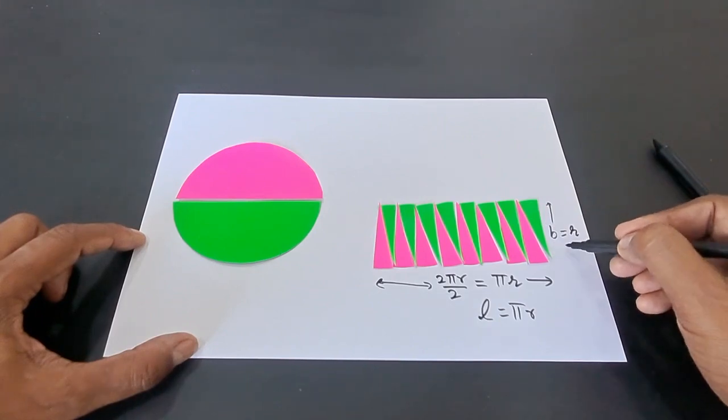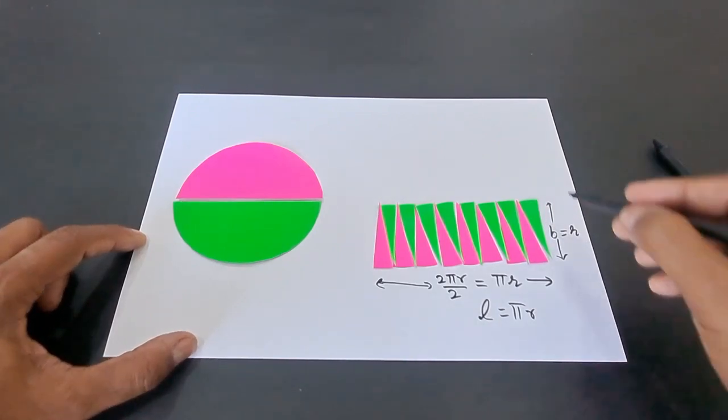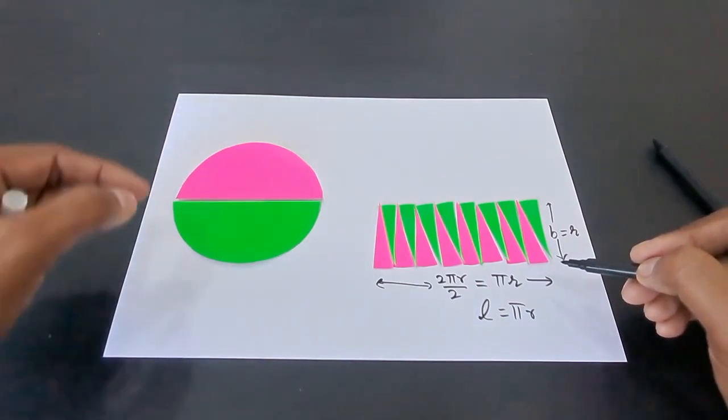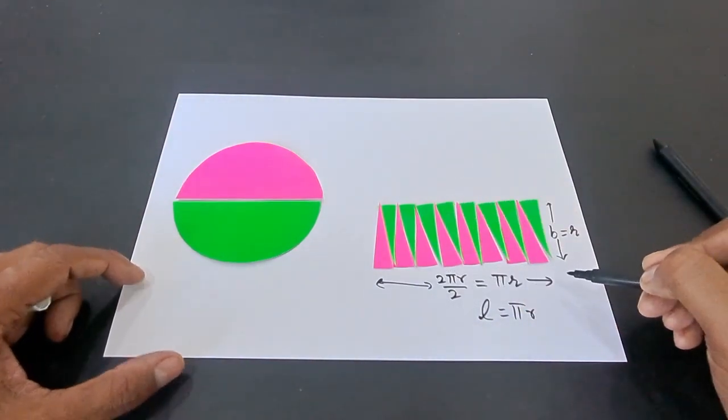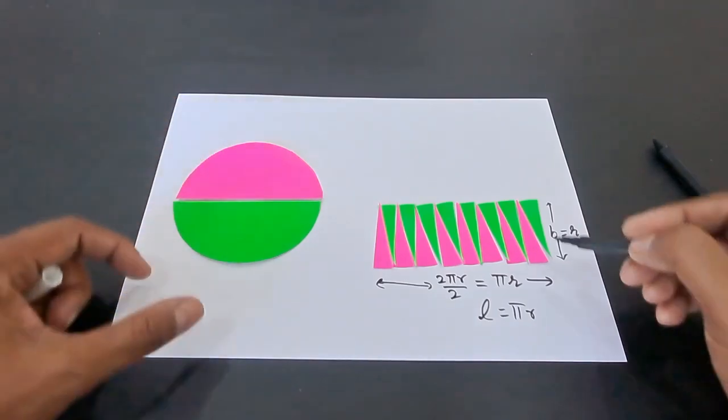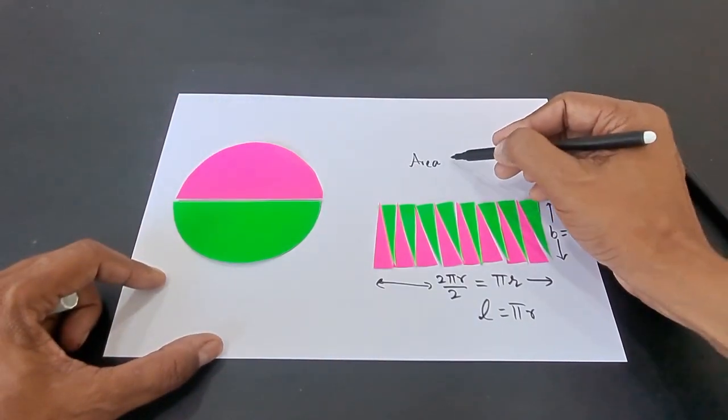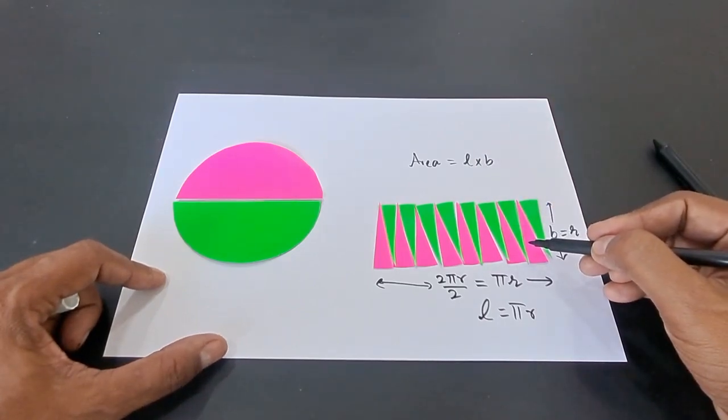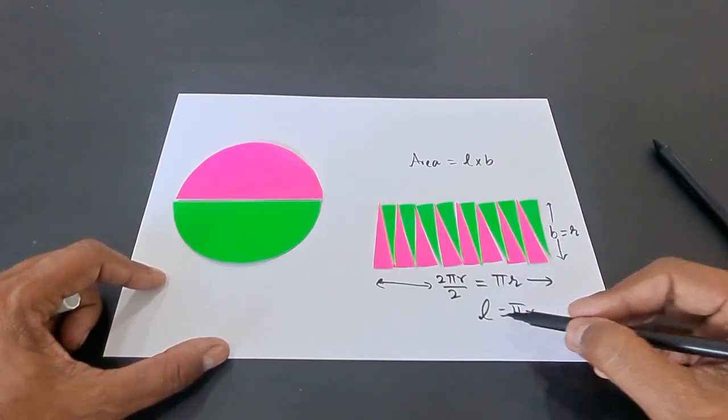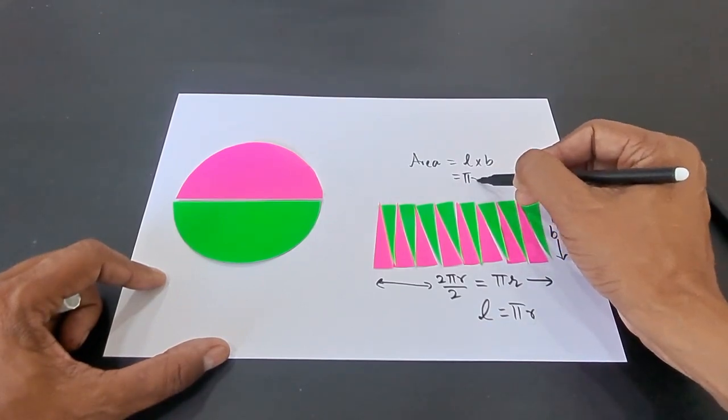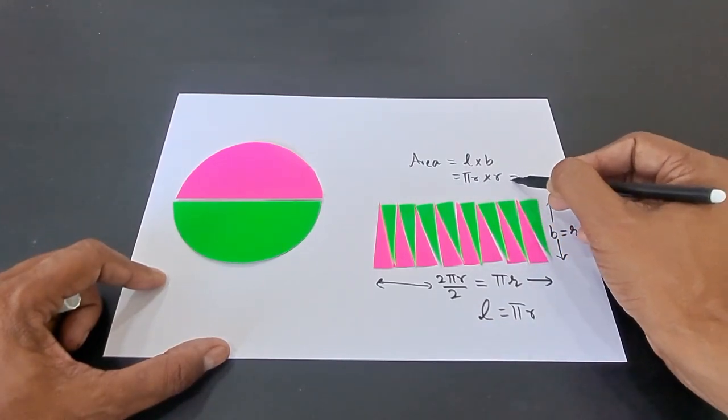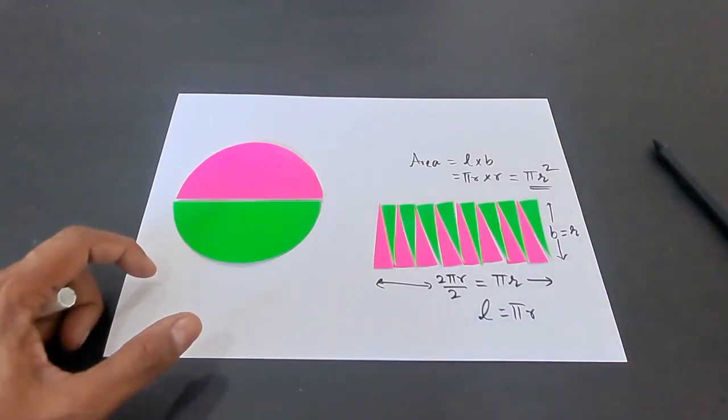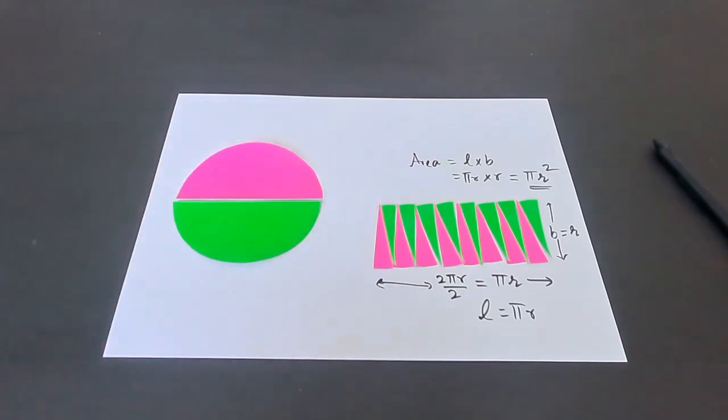So since we have formed this rectangle from the circle itself, therefore the area of the rectangle will be equal to the area of circle. And therefore, area of circle will be length times breadth. That means area of the rectangle - length is πr and breadth is r. So πr times r gives you πr², which is the formula for finding the area of a circle.